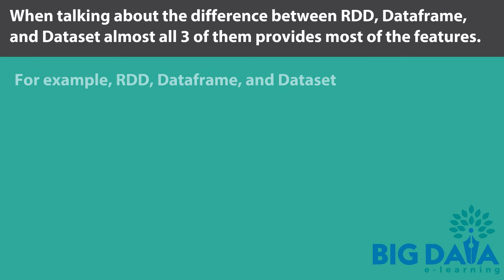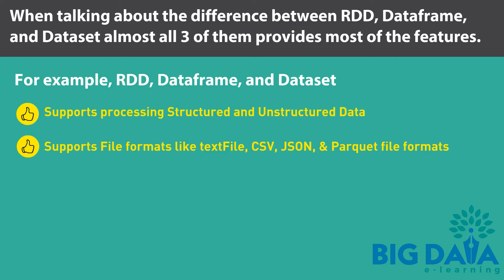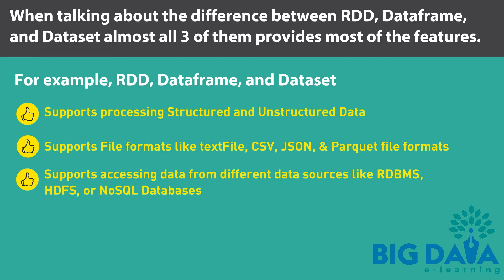For example, RDD, DataFrame, and DataSet all support processing structured and unstructured data. All three support file formats like text file, CSV file, JSON, and Parquet file formats. All three abstractions also support accessing data from data sources.